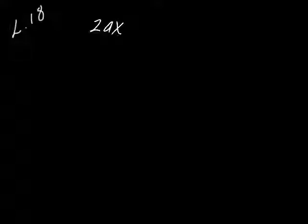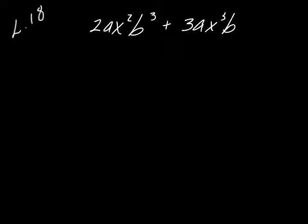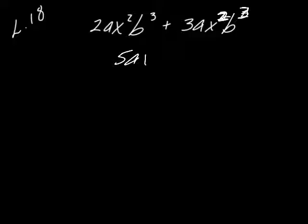If we have a problem like 2AX²B³ and we're adding it to 3AX³B², are those like terms? AXB and AXB — I have a 2 there and a 3 there, not like terms. I have a 3 there and a 2 there, not like terms, so I can't add them. But if I were to switch the exponents and make them match the first one, I'd add my 2 and 3 and get 5, then have AX²B³ for an answer.